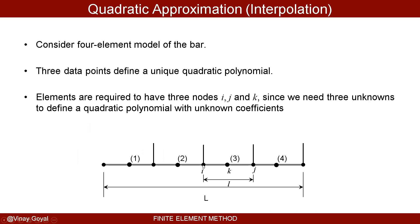I'm going to take a single element with length L and a middle node K, with end nodes I and J. There are three unknowns, which makes sense: if I have a polynomial that has to satisfy three nodal values, a quadratic polynomial is appropriate. In finite elements, a quadratic polynomial means a second-order element. When software asks if you want a linear or second-order element, that's what it means — using a higher-order polynomial to approximate the solution. You divide the domain into small pieces, use a quadratic polynomial over each small element, solve element by element, and assemble everything together.